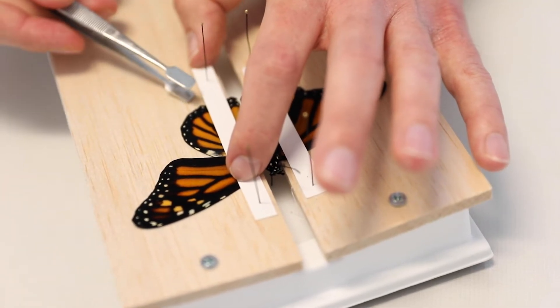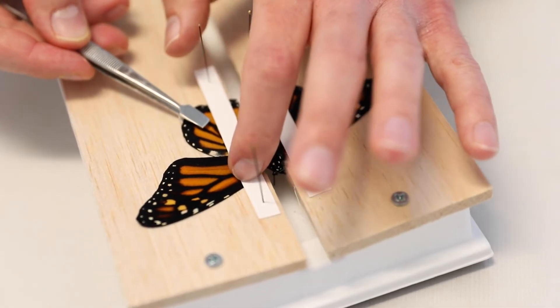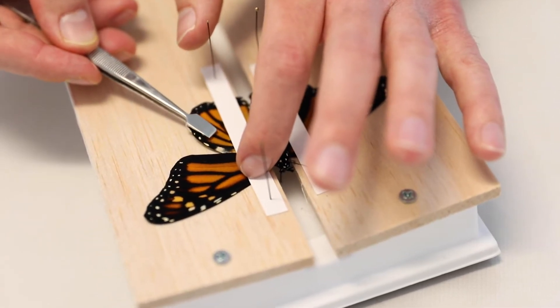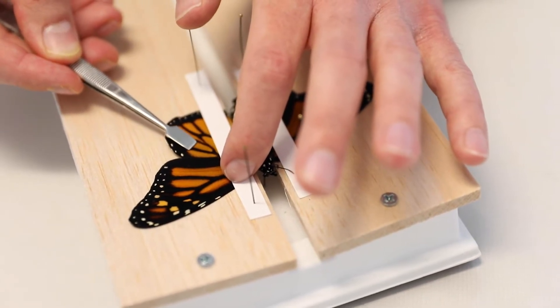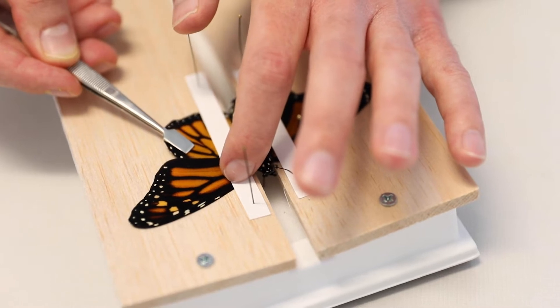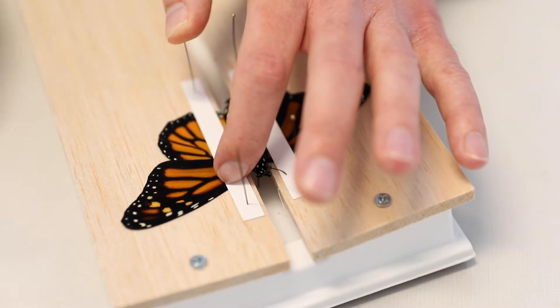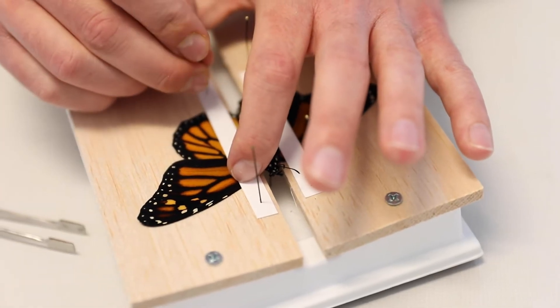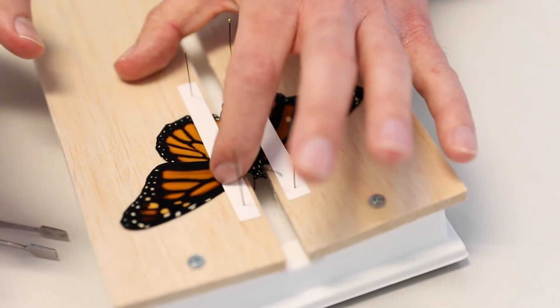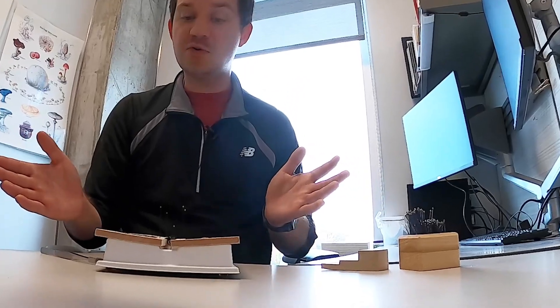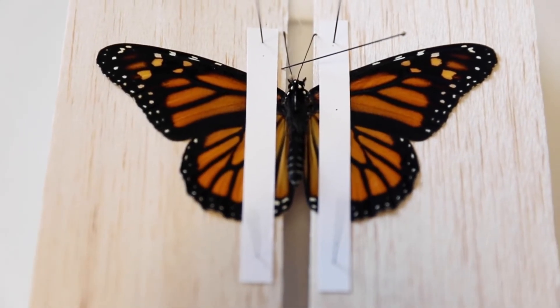I'm going to do the same thing with the bottom wing. I'm putting a little bit of pressure on the front wing here just so when I release the pressure from the back, that front wing doesn't start coming back down. I'm going to put some pressure on that forewing, release the pressure on the back wing, gently get my forceps underneath that bottom wing, grab it by the thickest veins which are usually up front, and just move this into a good position.